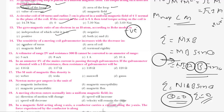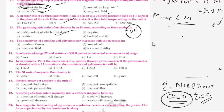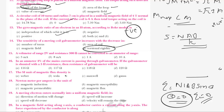Question 14: The sensitivity of a moving coil galvanometer increases with a decrease in what? The sensitivity formula is NAB divided by K. Sensitivity increases with a decrease in K, which is the torsional rigidity.